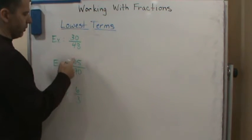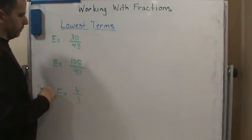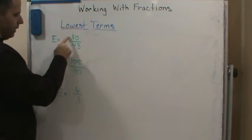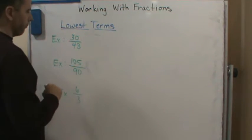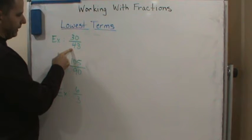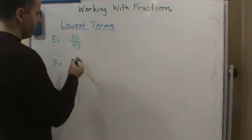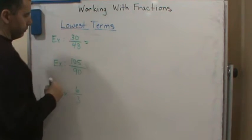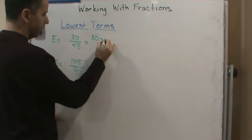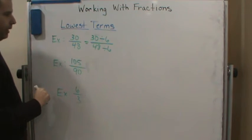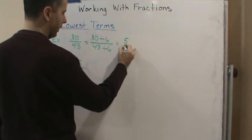In this case we have 30 over 48, so we want to know what's the largest number that will divide both 30 and 48. Looking at the divisors of both, the largest number I can think of is 6, because 6 divides 30 and 6 also divides 48. So I'm going to divide the top and the bottom by 6: 30 divided by 6 over 48 divided by 6, which gives me 5 eighths.